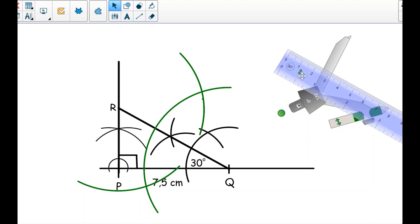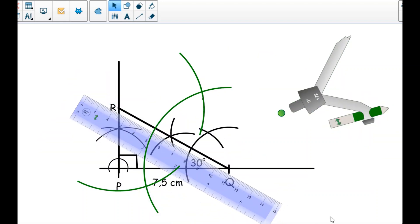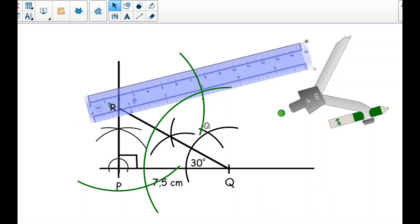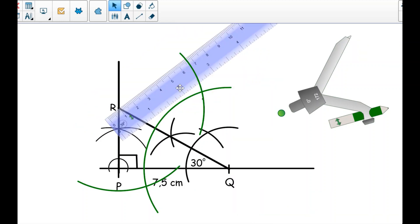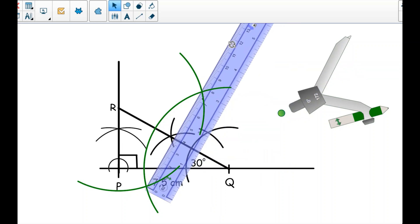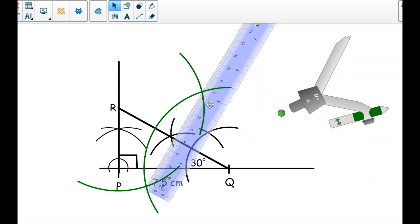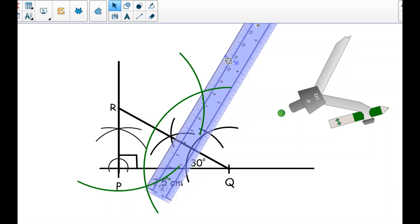So where these arcs are intersecting I join, so that I bisect my line QR. These are the two points I've been given, so I have to bisect. So I am drawing a line here.